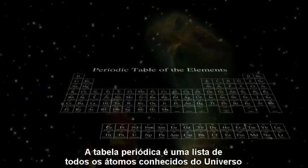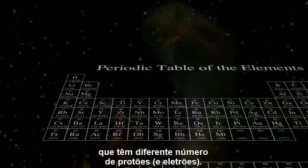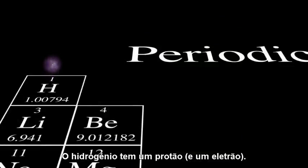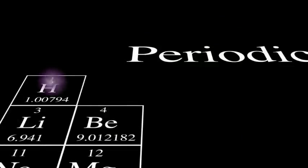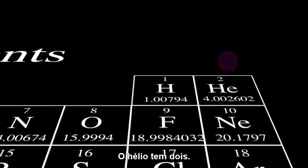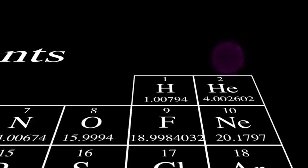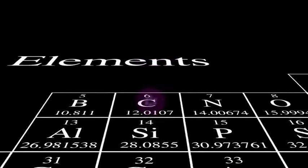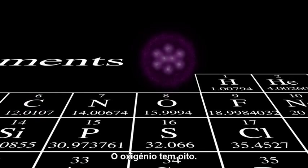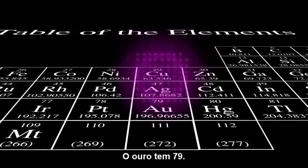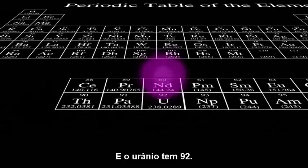The periodic table is a list of all the atoms in the universe that have different numbers of electrons. Hydrogen has one electron. Helium has two. Carbon has six. Oxygen, eight. Gold has 79. And uranium has 92.